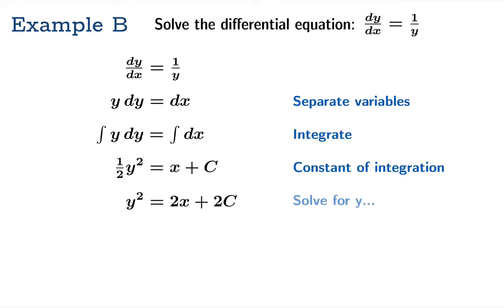y squared then equals 2x plus 2c, multiplying both sides by 2. And now y equals plus or minus the square root of the quantity 2x plus 2c.